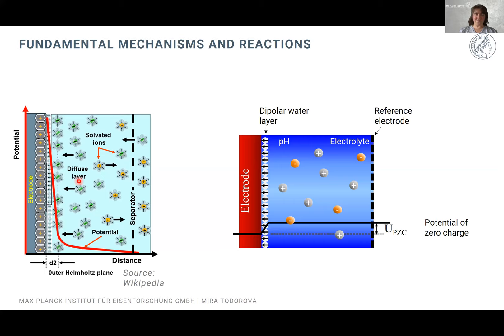Even looking at a simple metal-water interface, as shown in this cartoon from Wikipedia, we have a very complicated situation. There is a potential drop due to the rearrangement of ions and differences in surface potentials between the two condensed phases, which can extend to several hundred nanometers depending on how dilute the solution is. Describing this with DFT is very challenging; we can only look at small parts of this interface.